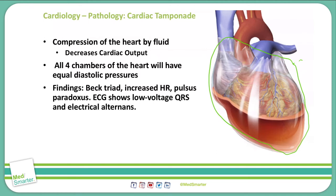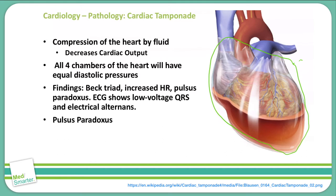We can also see in cardiac tamponade an increase in heart rate and pulsus paradoxus, which we'll discuss in just a minute. Our ECG will show low voltage QRS and electrical alternans.